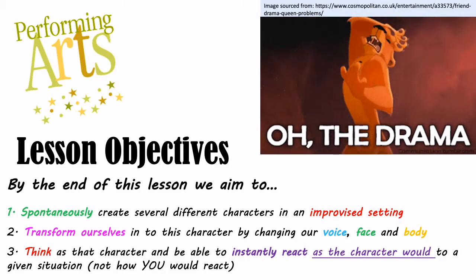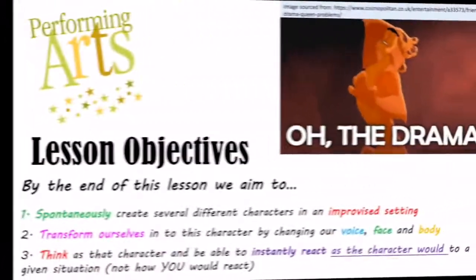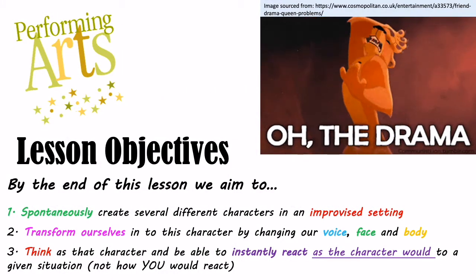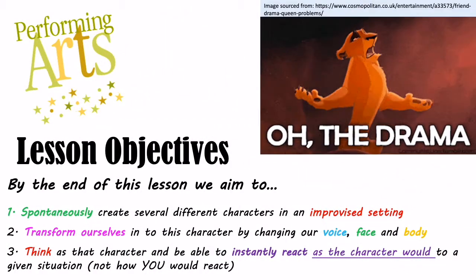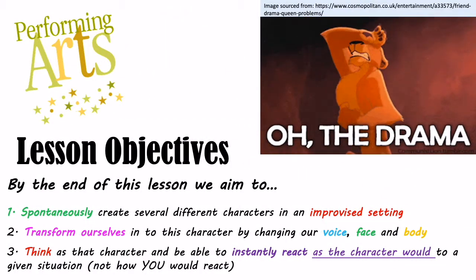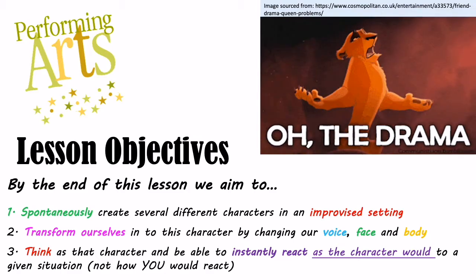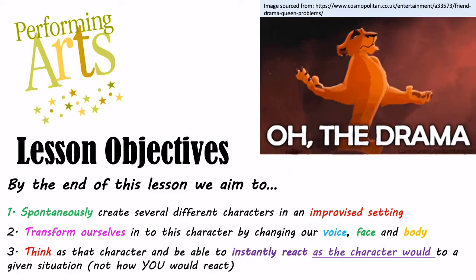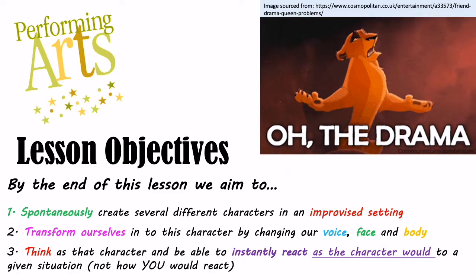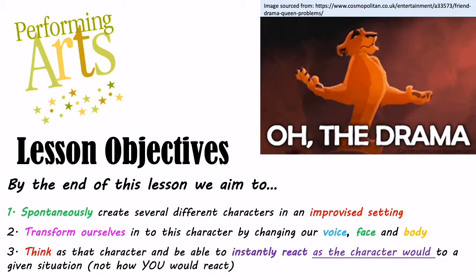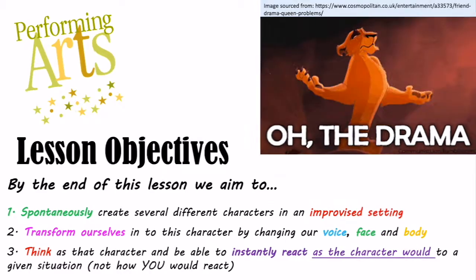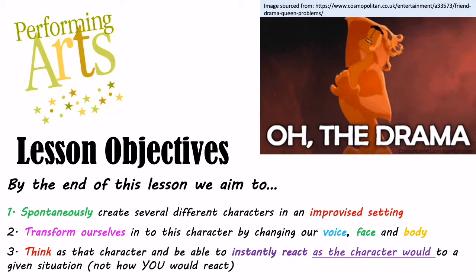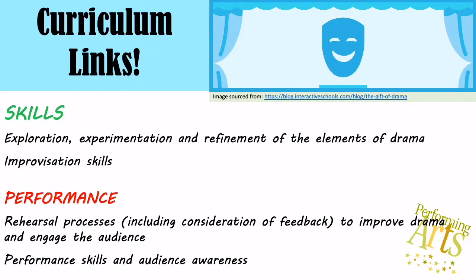Here are our lesson objectives. By the end of the lesson we aim to achieve these things. One, spontaneously create several different characters in an improvised setting. Two, transform ourselves into this character by changing our voice, face and body. And three, think as that character and be able to instantly react as the character would, not how you normally would.